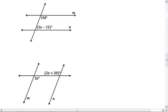For this first part, we notice that these angles are consecutive interior angles. So we want them to be supplementary, meaning that 3x minus 15 plus 150 needs to equal 180.